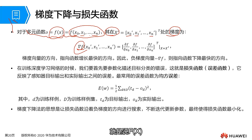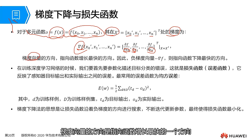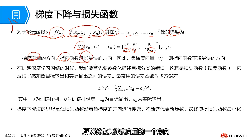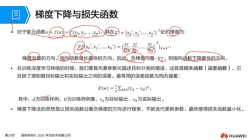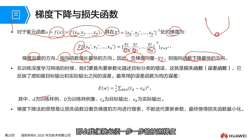Expanding on this, it means the partial derivative of f with respect to x0, x1, and xn. From mathematics, we understand that the direction of our gradient vector points to the direction where the gradient grows the fastest. Therefore, the direction of the negative gradient vector points to the fastest descending direction of our function.